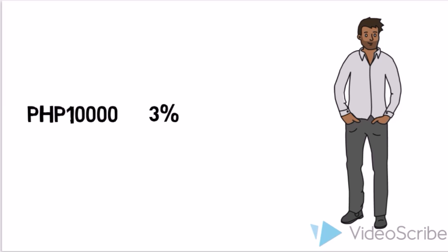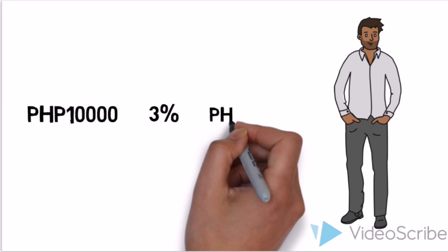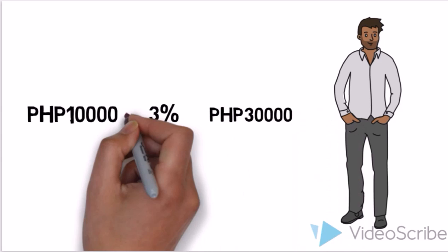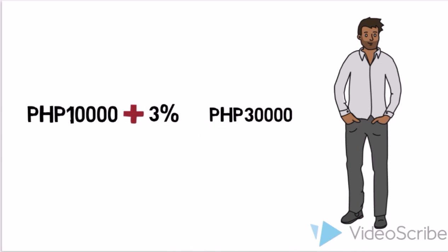If he or she sold 30,000 pesos for the month, his gross earning and commission will be 10,900.